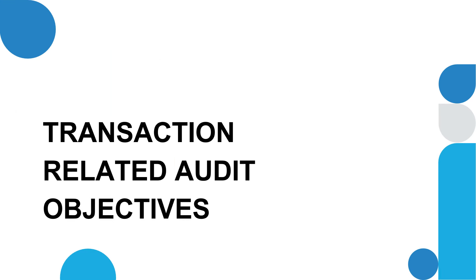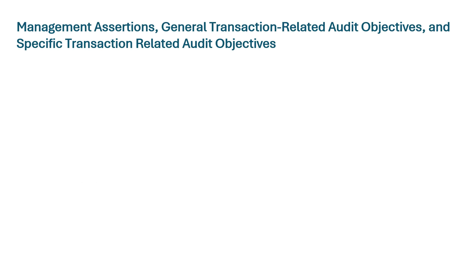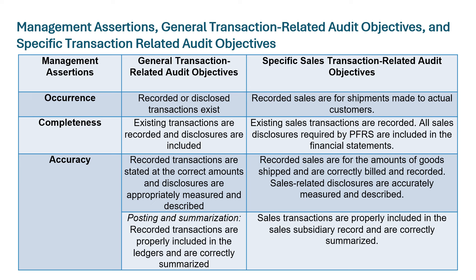Let's look at examples of transaction-related audit objectives. We'll see a table showing management assertions alongside the corresponding general and specific transaction-related audit objectives. Starting with the management assertion on occurrence: the general audit objective would be that recorded or disclosed transactions exist, or that recorded or disclosed transactions occurred. This broad statement can be applied to sales, purchases, utilities, or any transaction.